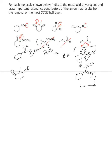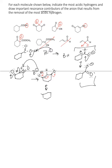For the second one, you have a diketone, so the base then deprotonates — remember there are two hydrogens there. This would be one resonance structure, and then another one would be these electrons going here and pushing those electrons towards the other oxygen. So those would be the two resonance structures for that compound.